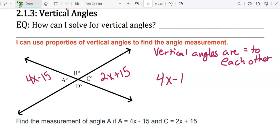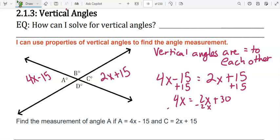4x minus 15 equals 2x plus 15. Let's add 15 to each side, and then subtract 2x from each side to get the x's on one side and the constants on the other.